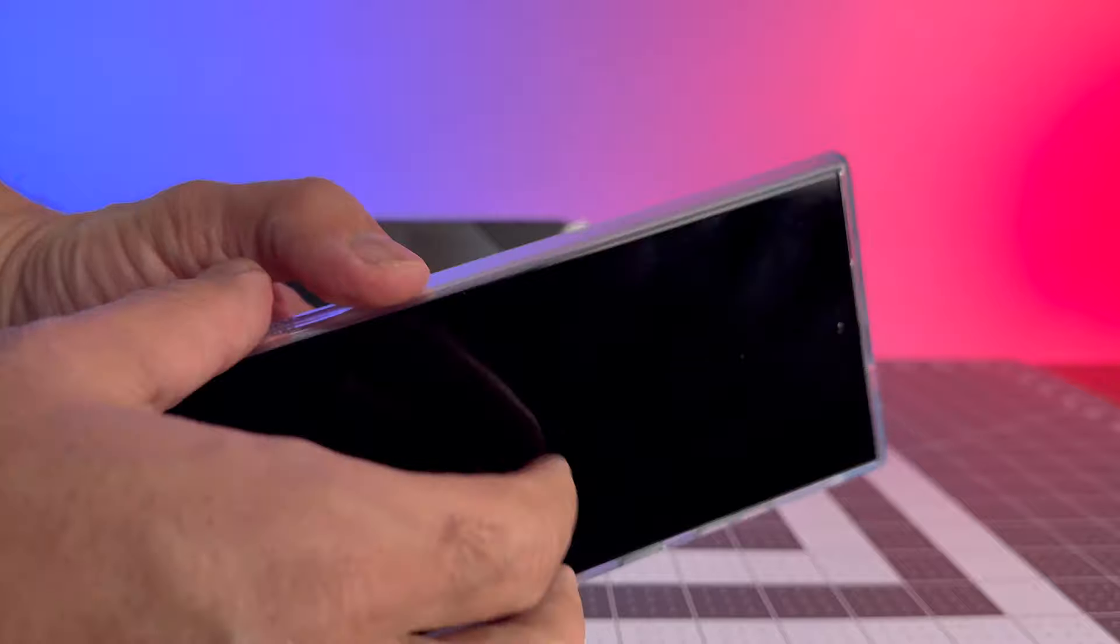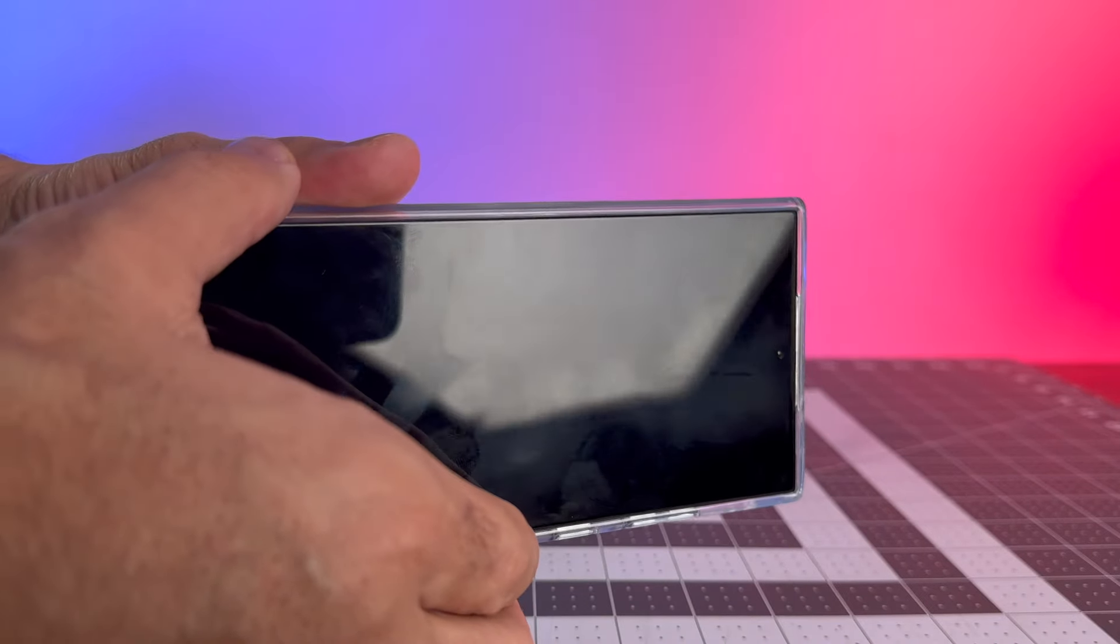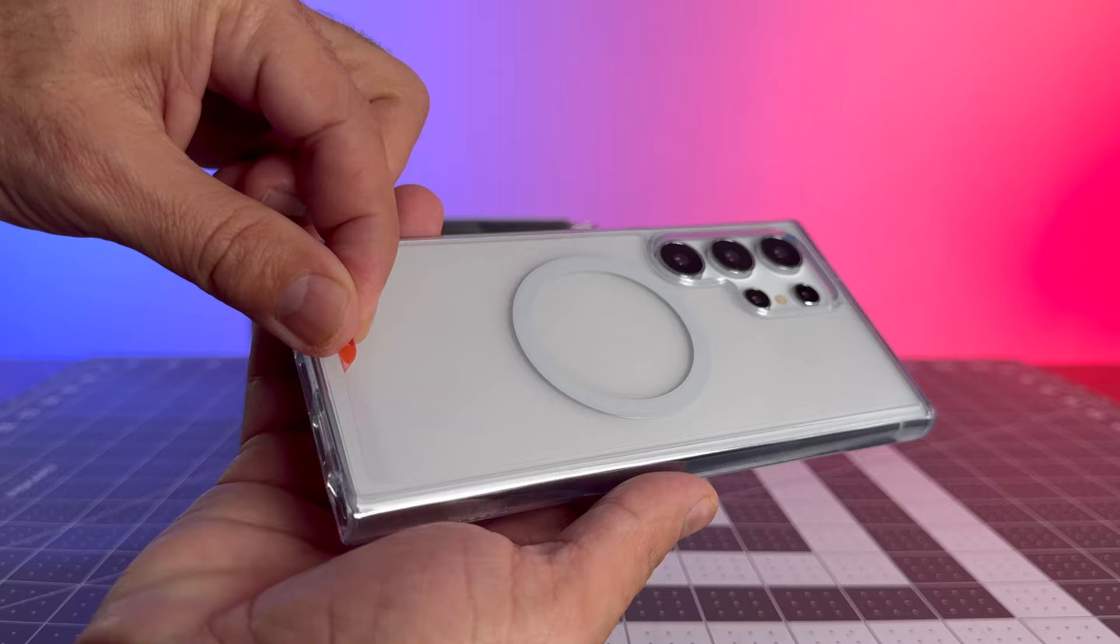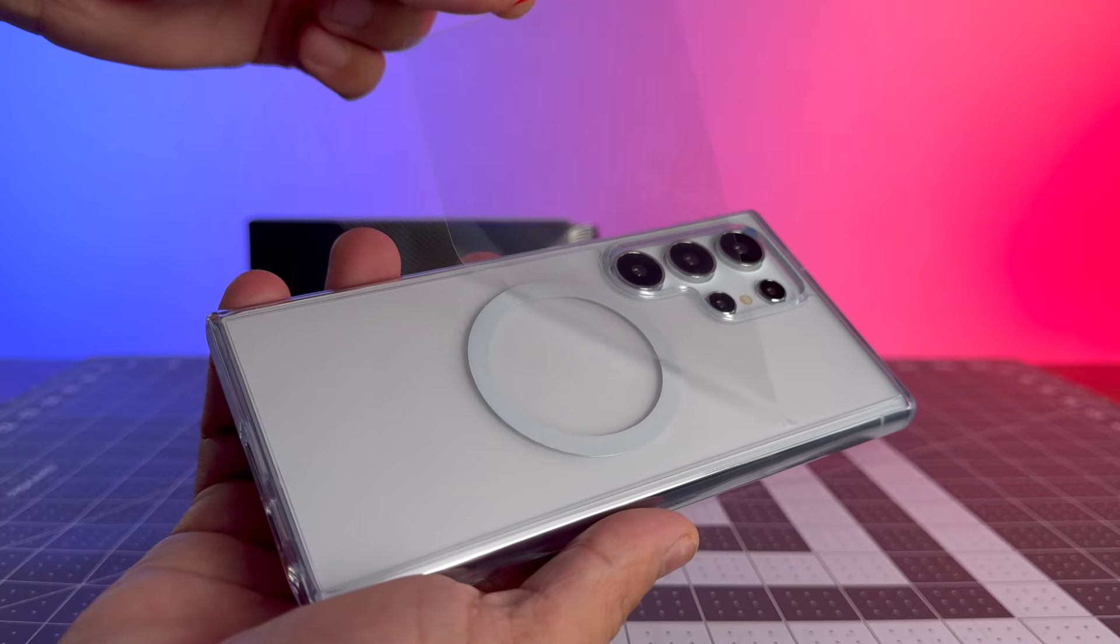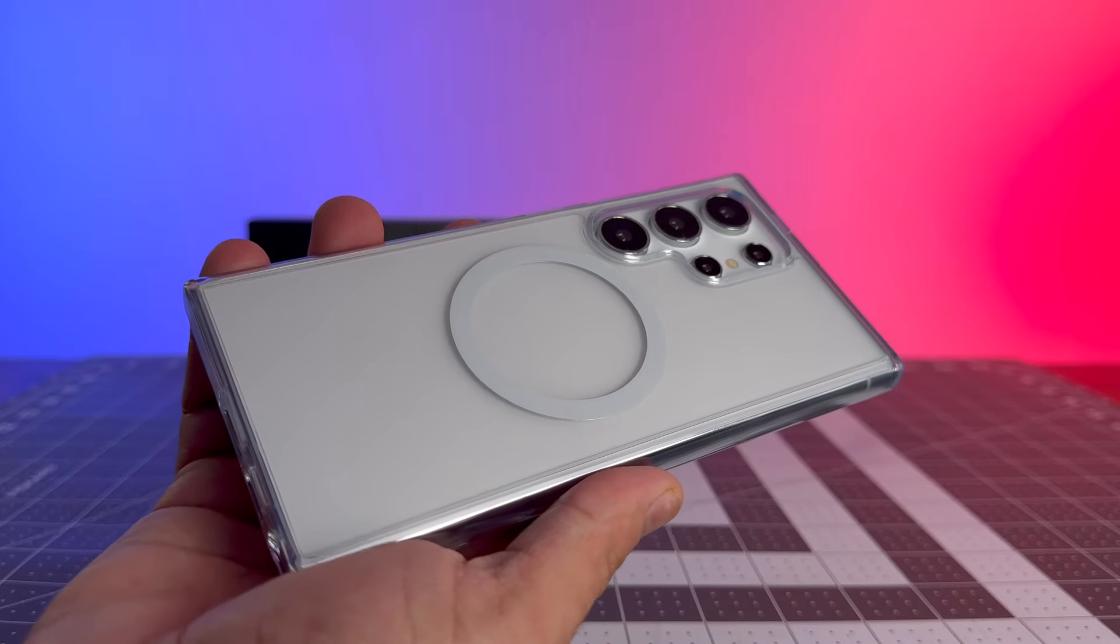At only 0.4 inches thick, it effortlessly slides in and out of your pockets without any annoying bulging feeling. Plus, it's custom-sized with precise hole positions, ensuring easy access to your S24 Ultra.